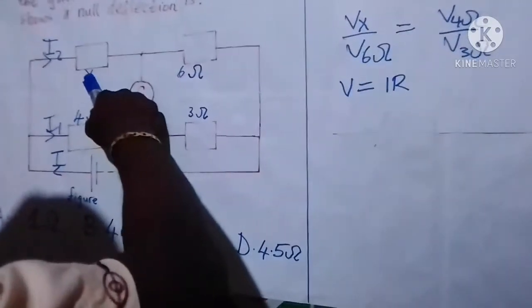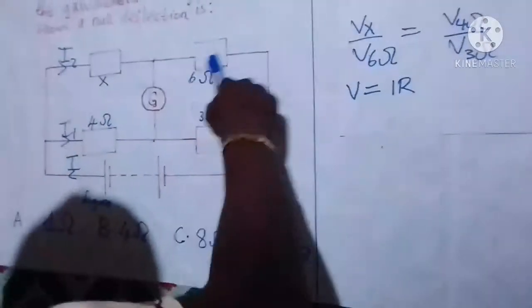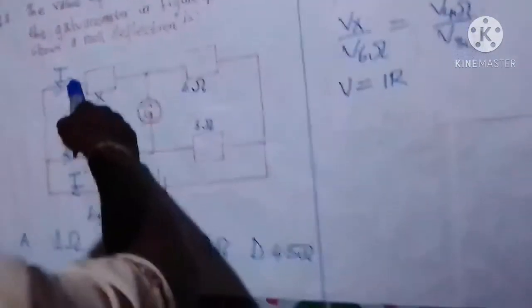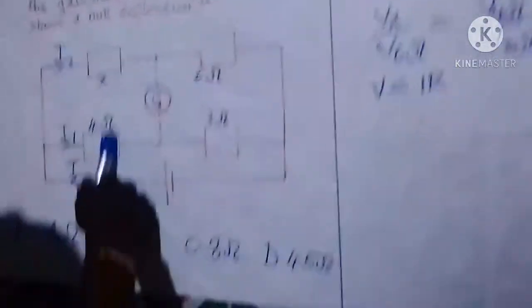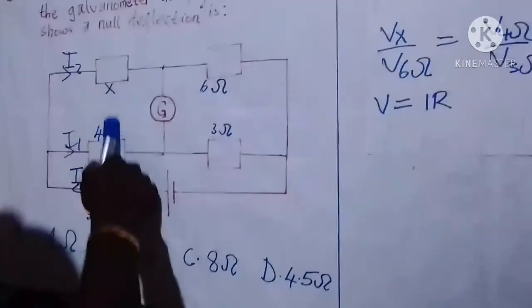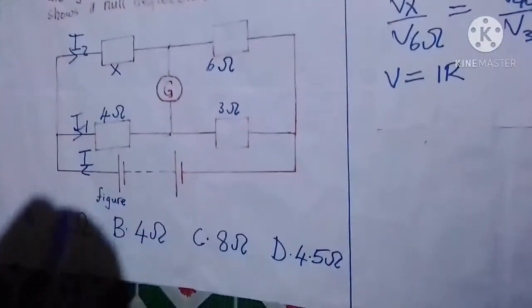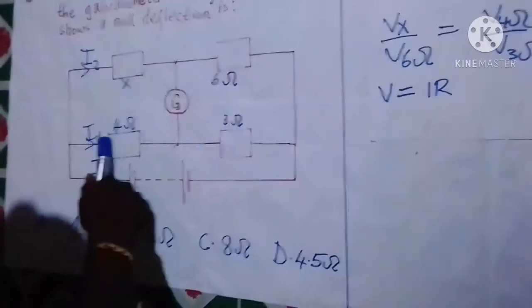You'll notice that the resistor with resistance capital X and this resistor with resistance 6 ohms, they are in series since they are carrying the same current I2. And the resistor with resistance 4 ohms and the resistor with resistance 3 ohms, they are carrying the same current capital I1.